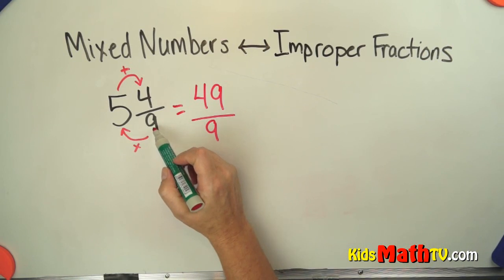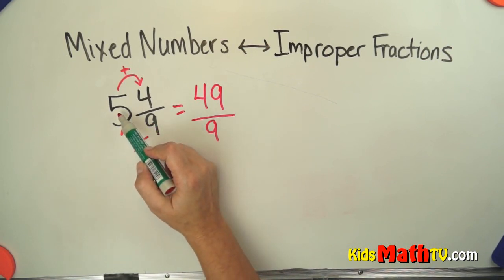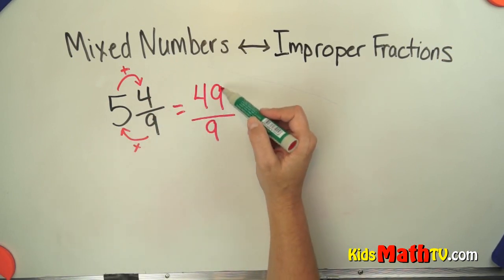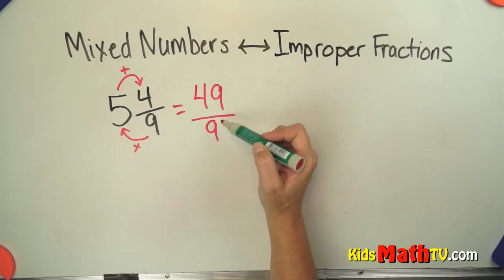So you multiply the denominator times the whole number and then add on the numerator. That becomes your new numerator and the denominator stays the same.